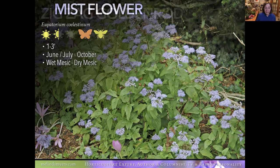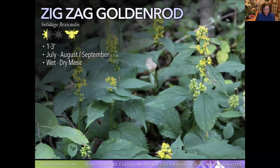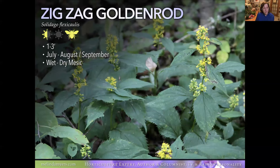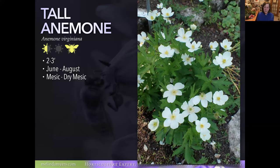Zigzag Goldenrod is another fall bloomer that spreads readily. There are a couple of goldenrods like Showy Goldenrod and Ohio Goldenrod that are less aggressive — you can still plant zigzag, just keep an eye on it. This one takes part to full shade, which not all goldenrods will do — that's a real benefit. It takes wet and dry. It gets the name 'zigzag' based on the way flowers are arranged on the flower stem. Very adaptable to soil moisture and a great summer into fall bloomer.